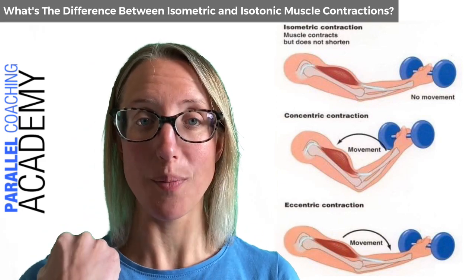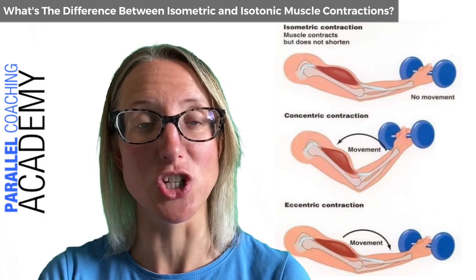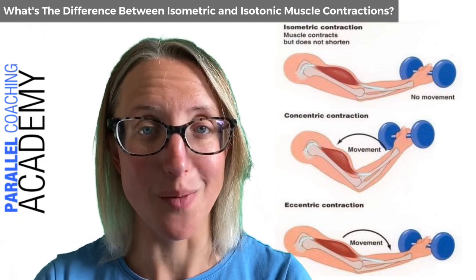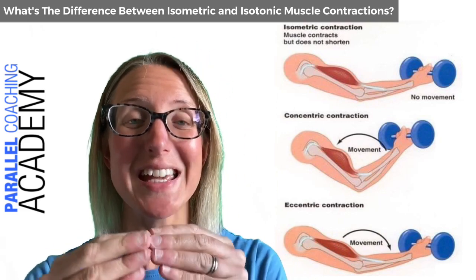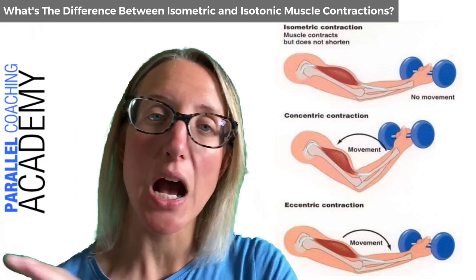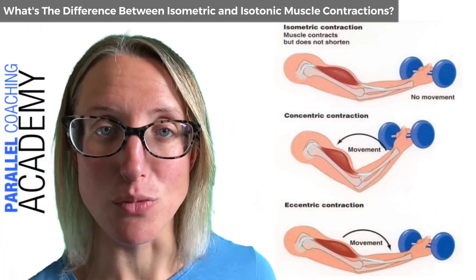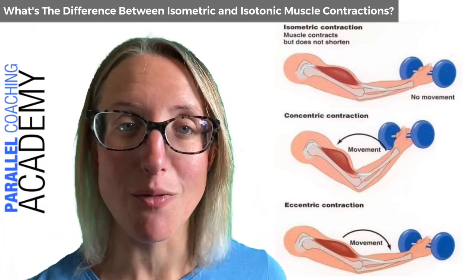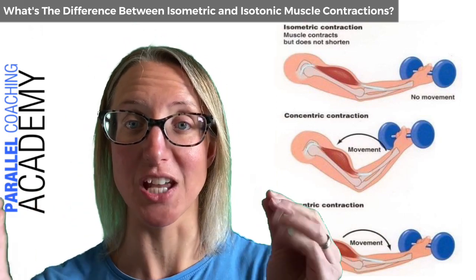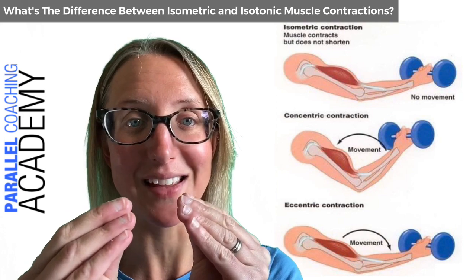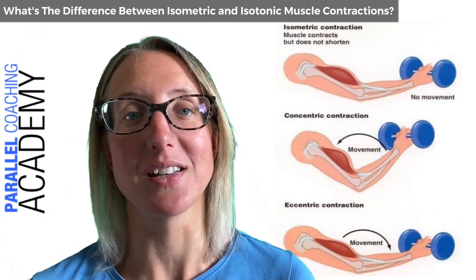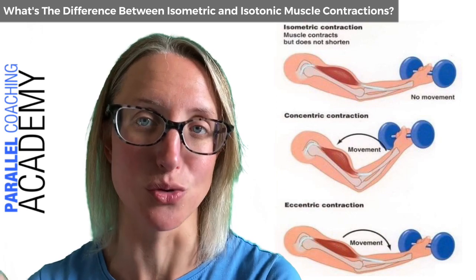Once you get to the top, you then lower the dumbbell down towards the floor — that's the eccentric contraction of your bicep. Notice that all of this happens through the same prime mover: it's just getting shorter, staying the same length, and then getting longer. That's what we mean by the different types of muscle contractions.